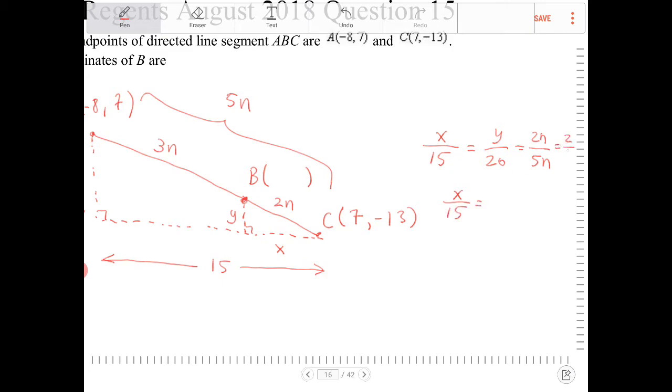Well, 2n over 5n, isn't that just 2 fifths? So x over 15 is equal to 2 fifths. I can cross-multiply both sides by 15. So x is equal to 15 times 2 fifths. So x is equal to 6.